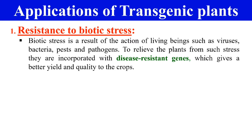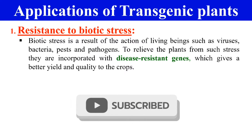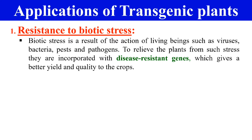The applications of transgenic plants include, first, resistance to biotic stress. Biotic stress is the stress burden on the plant which is due to living beings like viruses, bacteria, pests, and pathogens. By using transgenic plants, we can develop disease-resistant plants by transferring genes that provide resistance against specific pathogens. We can make insect-resistant, virus-resistant, or bacterial-resistant plants by transferring specific resistance genes.